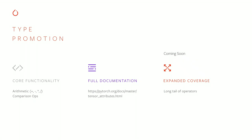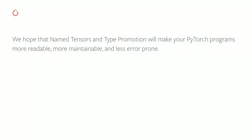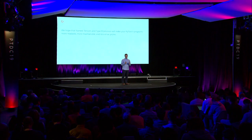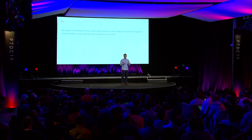Type promotion is available in 1.3 for arithmetic operations, comparison operations, and a number of other operations. There's full documentation on the website covering all the rules. For NumPy fans, the rules are very similar to NumPy — we just made some slight tweaks to support our use case. In the future, we'll be expanding coverage to the long tail of operators. Our hope is that incorporating these features into your program will make PyTorch programs more readable, more maintainable, and less error-prone — and ultimately make writing PyTorch even more enjoyable.